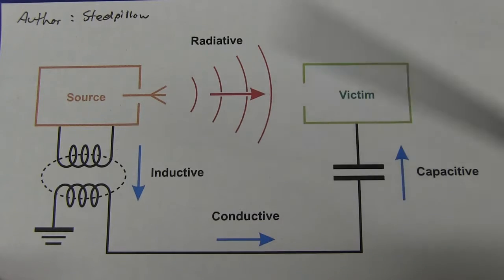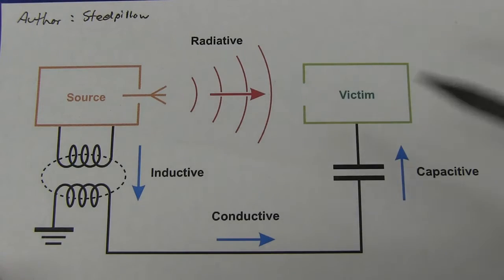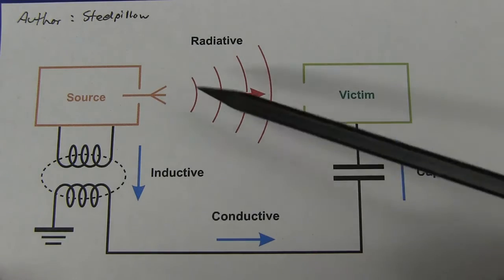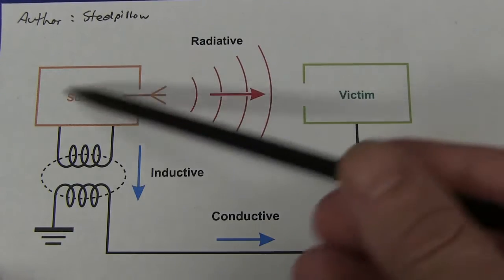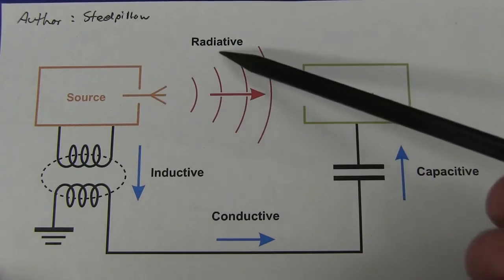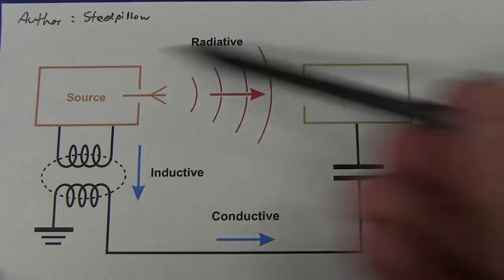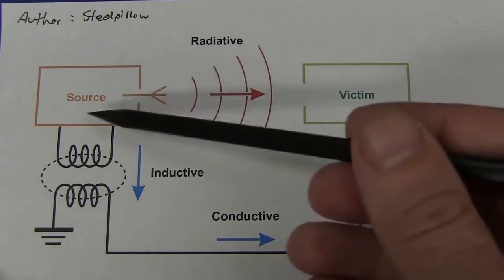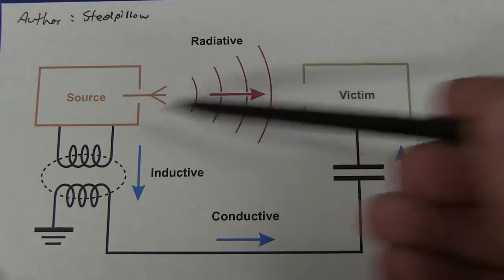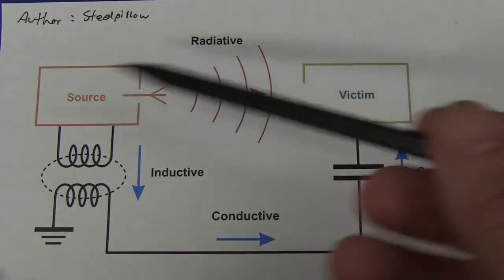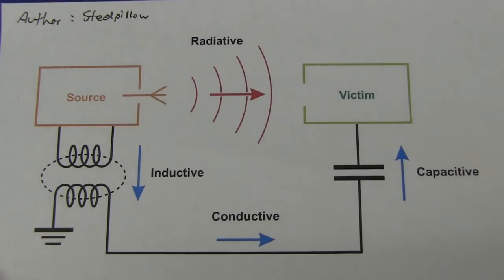Now I've got this diagram from Wikipedia, thank you very much, SteelPillow, because it quite nicely illustrates the four different coupling, noise coupling, or emissions coupling mechanisms from your device here, which we'll call the source. One of the major ones, of course, which everyone thinks of when they think of EMC compliance and things like that, is what's called radiative emissions. And you're probably familiar with this, your electronic product has lots of switching frequencies in there, very fast, sharp digital signals which emit broadband radiative noise emissions and things like that.